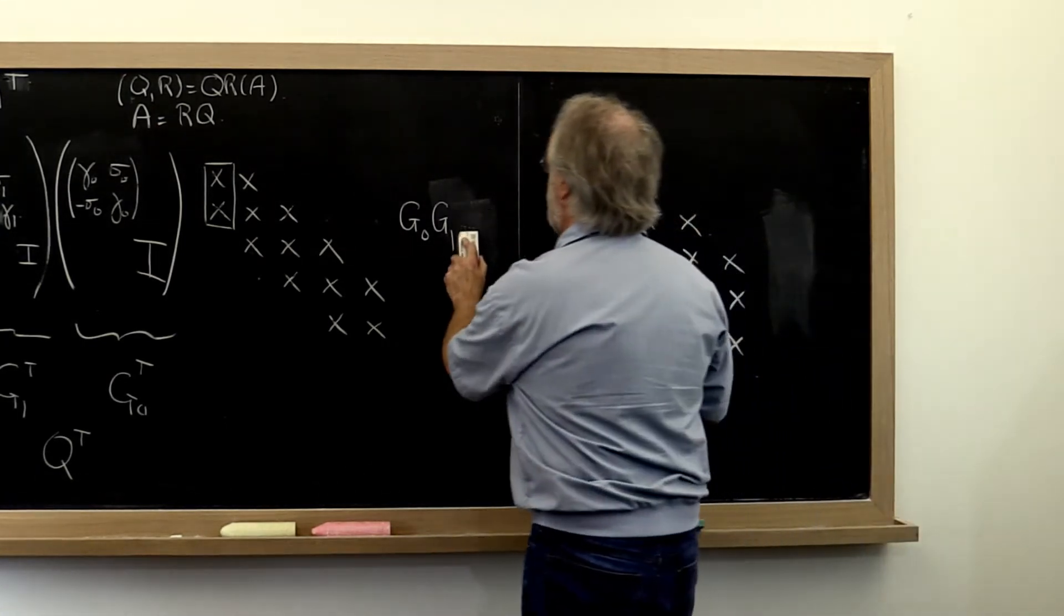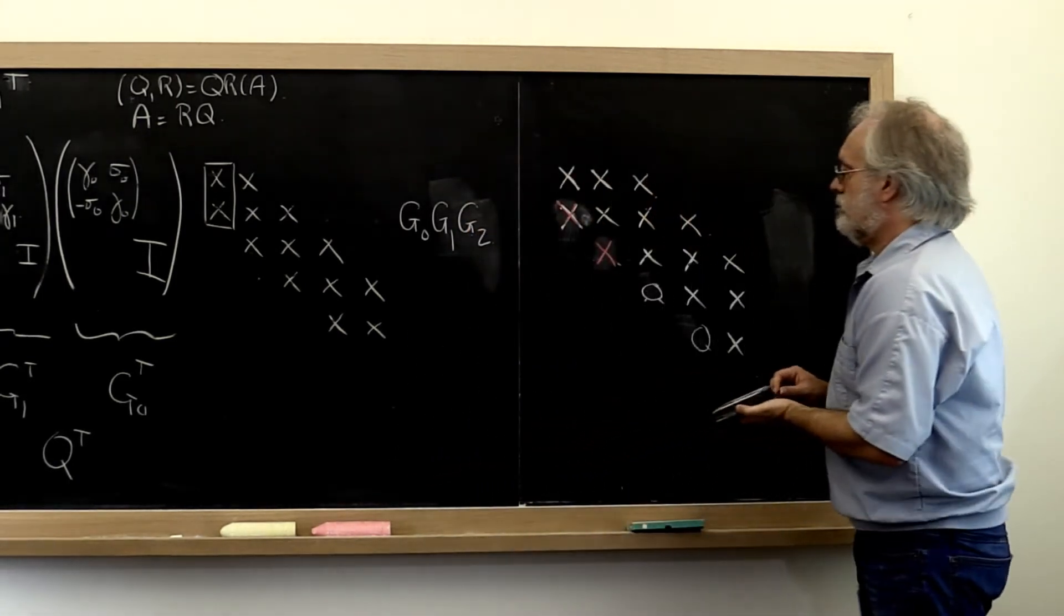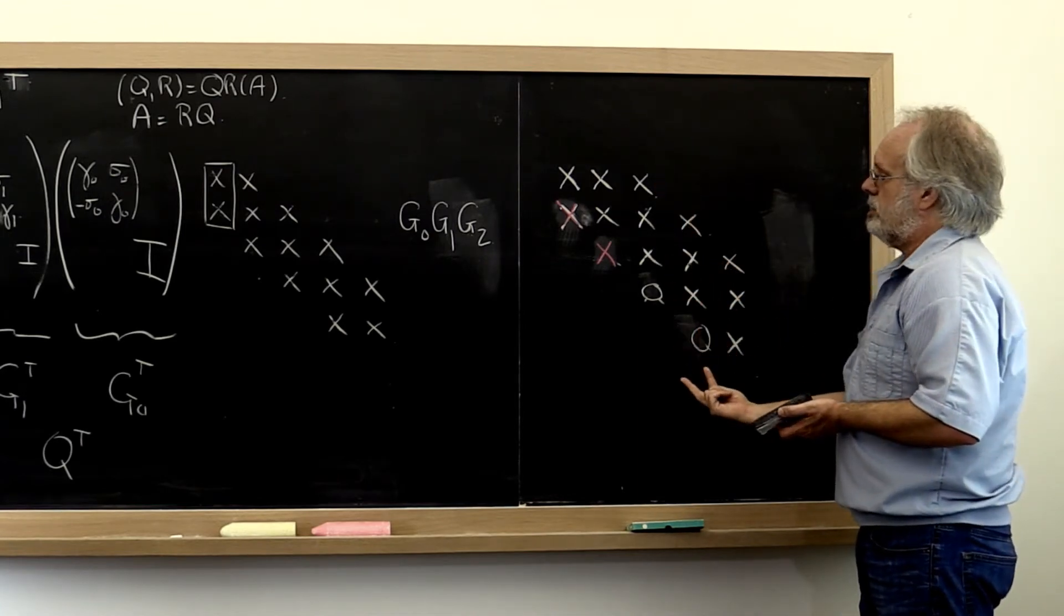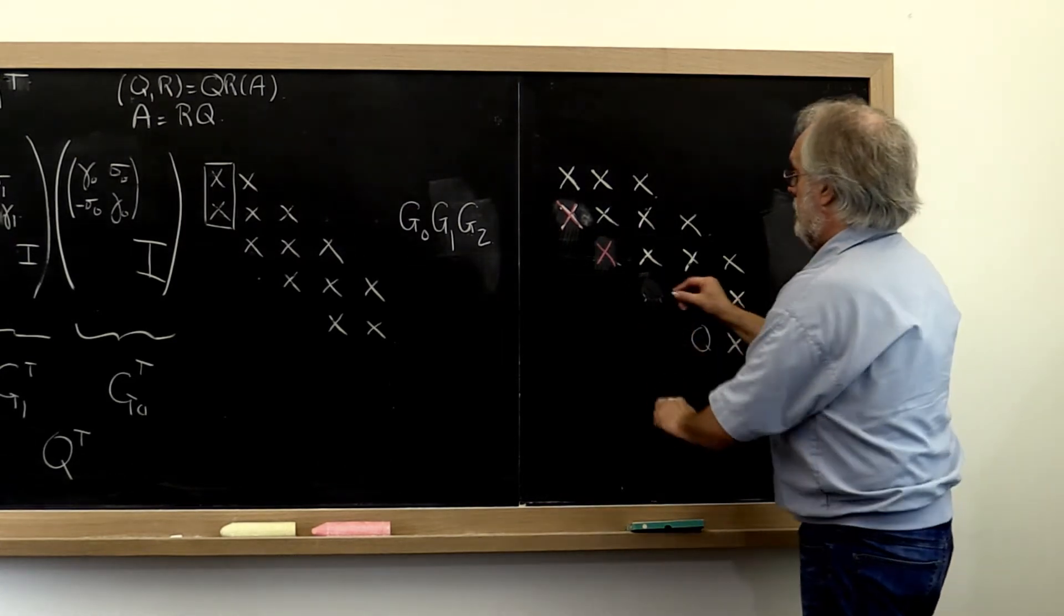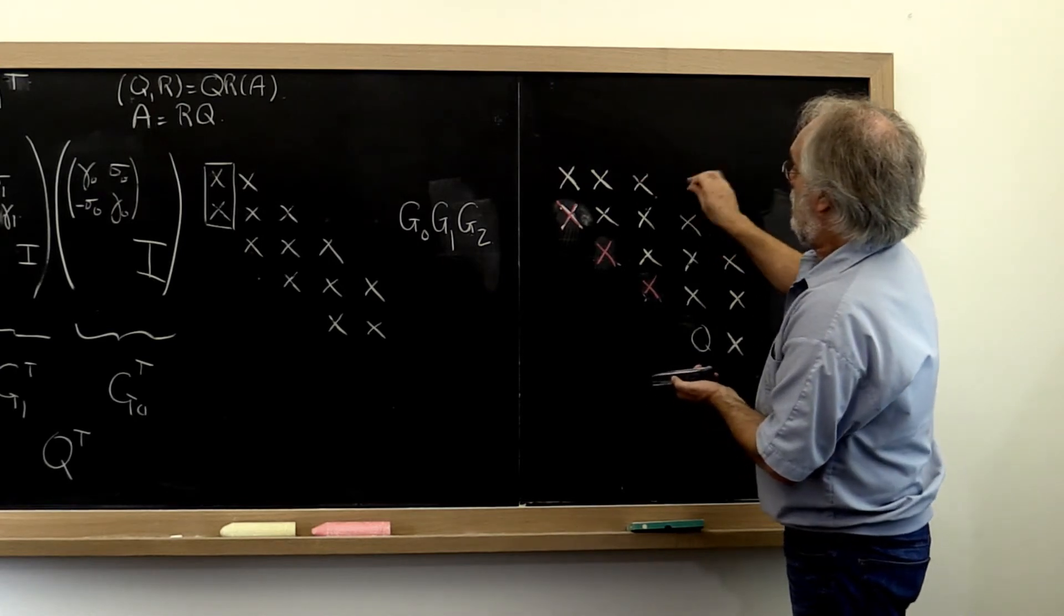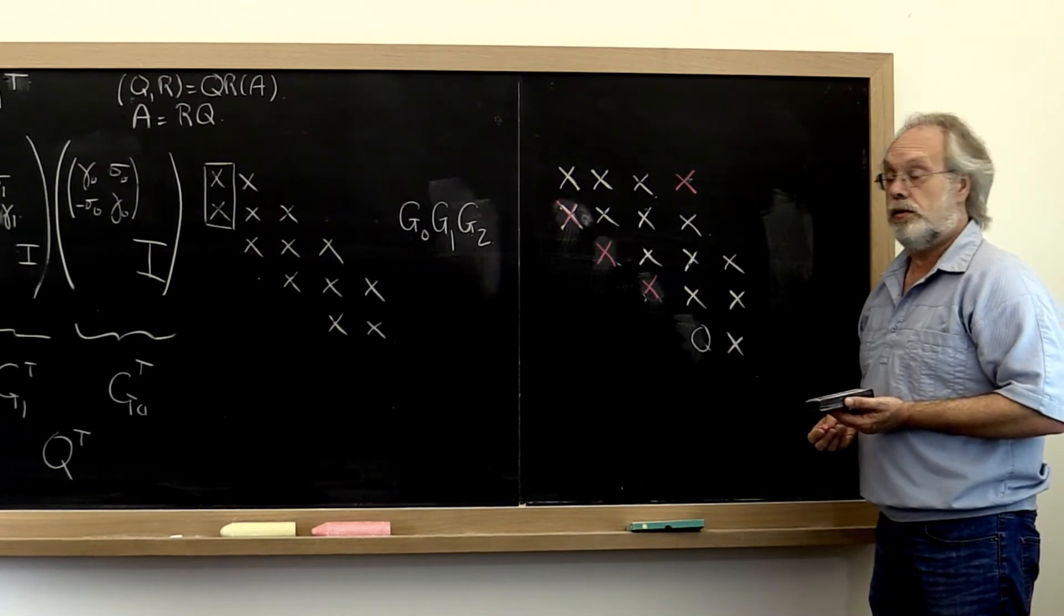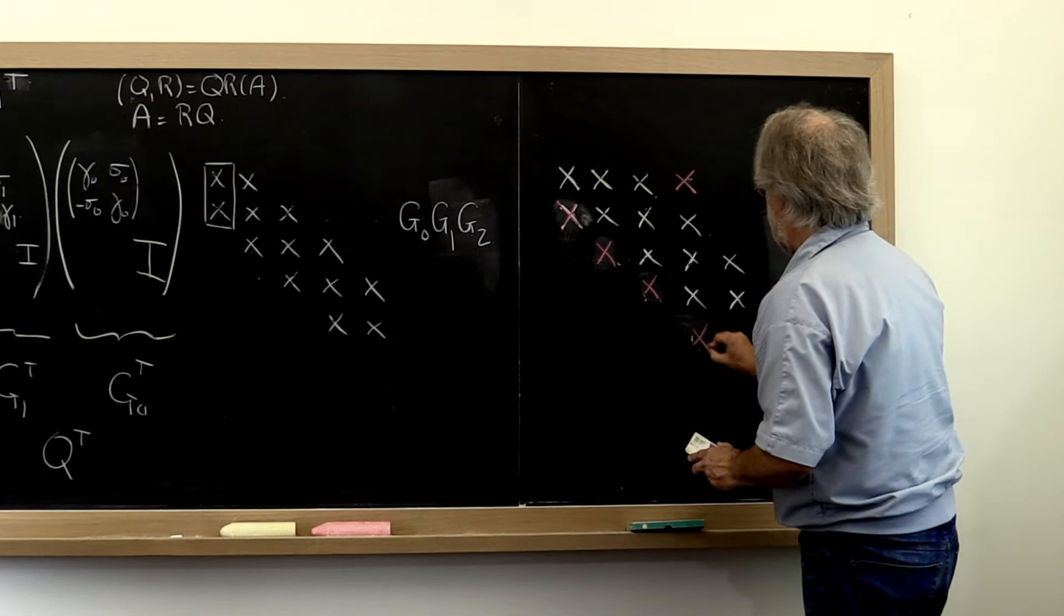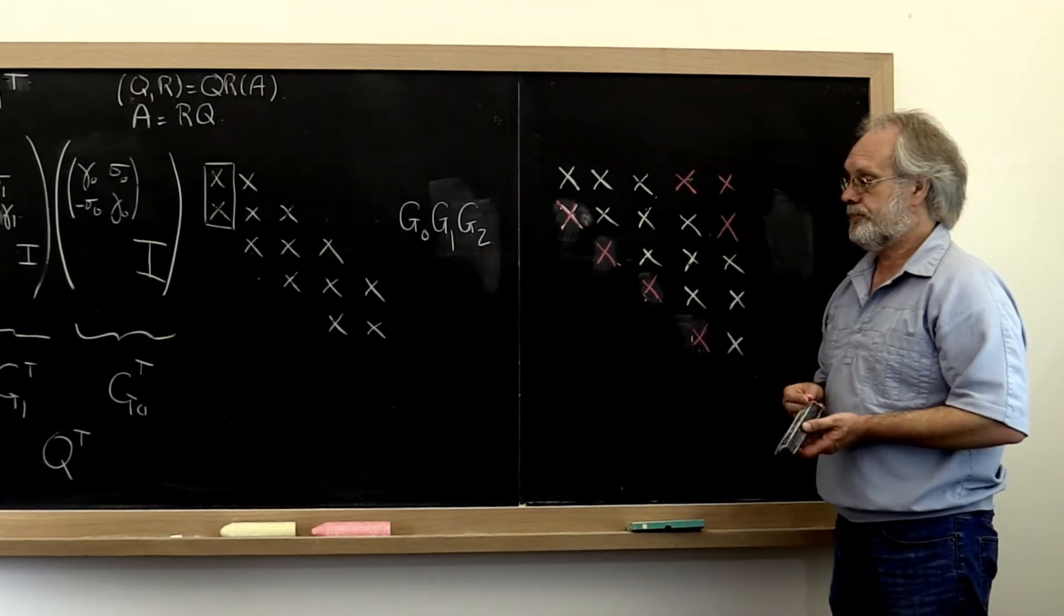Then we go and we apply G2. Now things get a little bit more tricky because in applying G2 from the right, notice that we introduce fill-in right here. But we also introduce fill-in right there. And if you keep doing that, what you end up with is a matrix that looks like this.